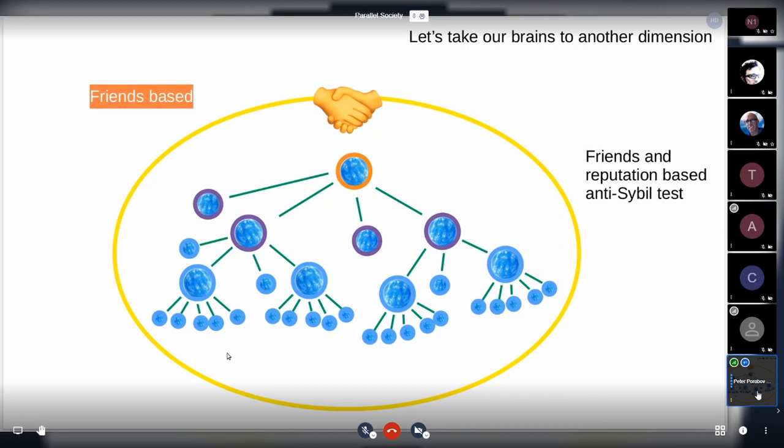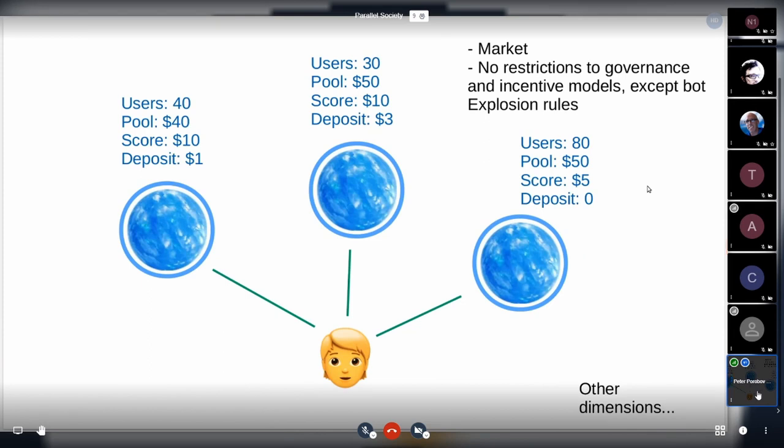This setup we could call friends-based or another way to think about it is a friends-based and reputation-based anti-sybil test to enter this hierarchy. But it's not the only way we can test for anti-sybil with Upala.